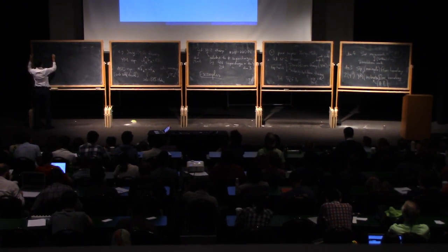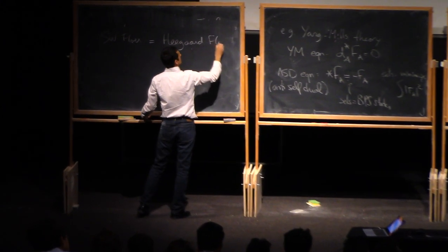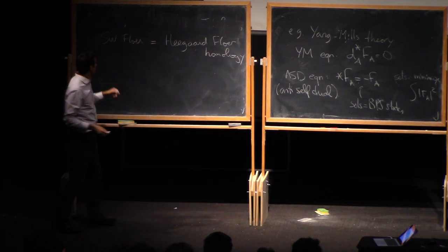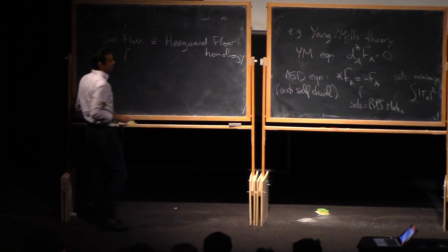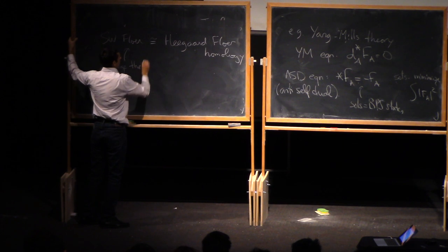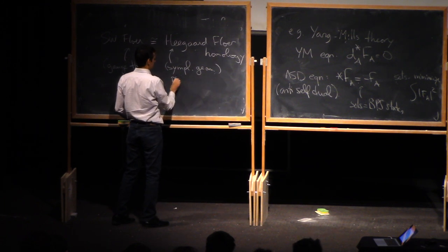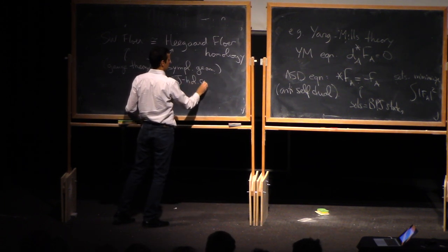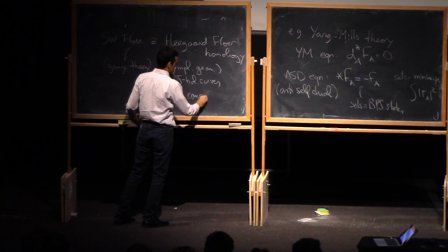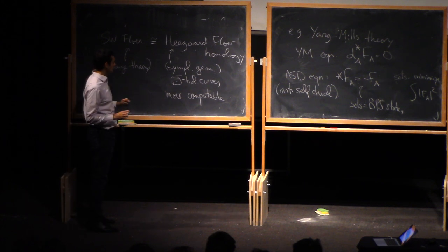Okay, so, oh yes. So, Seiberg-Witten Floer homology is actually the same as something else called Heegaard Floer homology. This was introduced by Ozsvath and Szabo, and they're the same. So, nowadays it's known that they are equivalent. But this is based on gauge theory, on PDEs. And this is constructed using symplectic geometry. And pseudo-holomorphic curves, basically J-holomorphic curves. And this one is actually more computable. So, that's why people like it. They like to do computations with it. It's somehow easier to work in symplectic geometry.